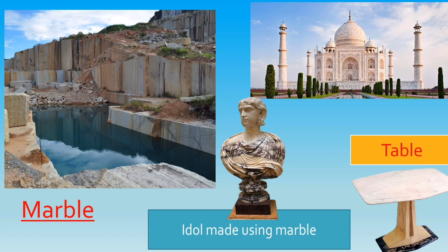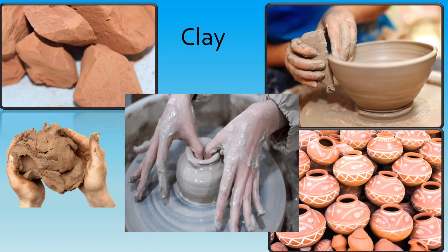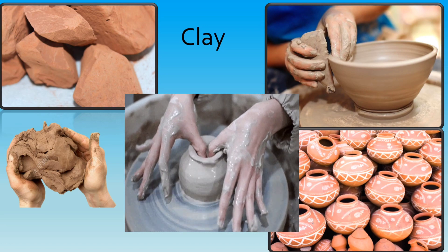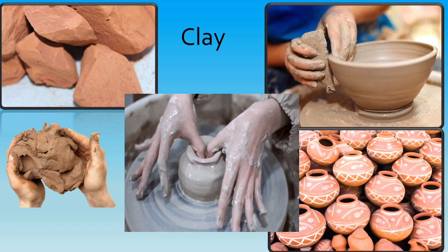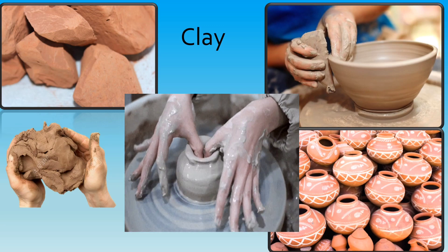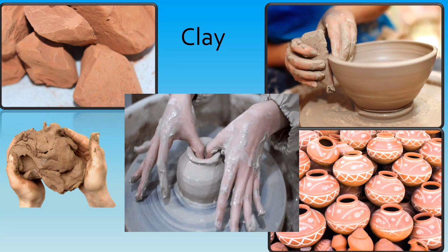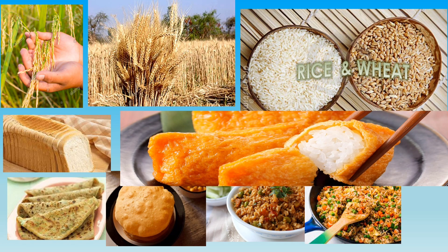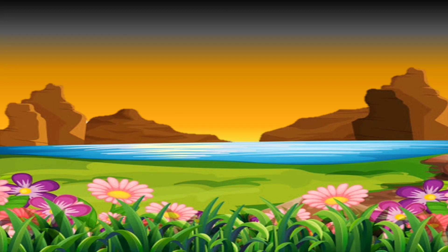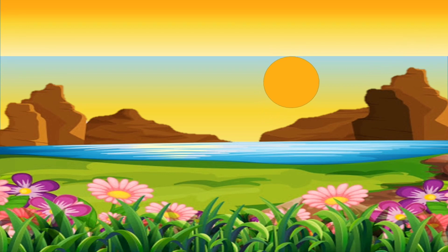Clay also comes from nature. People mold clay into plates, pots, and tiles, so clay is a natural thing and clay pottery is man-made. Wheat and rice are natural — we use them to make so many things. Natural things are used to make man-made things, and we must use these natural things wisely. Thank you.